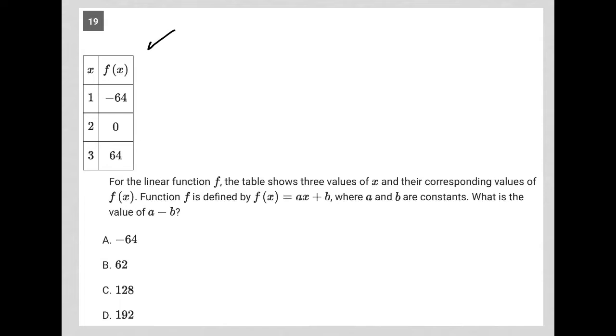So this question starts off by providing us with an xy table. We have these ordered pairs here: 1 comma negative 64. In other words, when x is equal to 1, f of x is equal to negative 64. We also have 2 comma 0, and we have 3 comma negative 64.